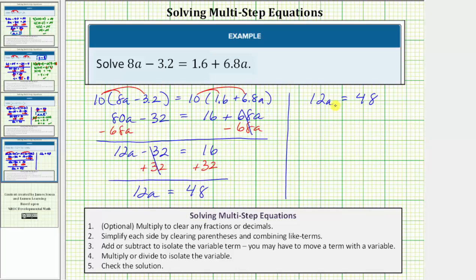The next step is to multiply or divide in order to isolate the variable. Well 12a means 12 times a. And therefore to undo this multiplication we need to perform the opposite or inverse operation. The opposite operation of multiplication is division. So for the next step we divide both sides by 12.